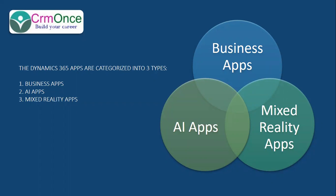These Dynamics 365 apps are categorized into three types. One is Business apps, the second one is AI apps, and the third one is Mixed Reality apps. Under the Business app, whatever business applications we use for the business, we will use the business apps. AI apps means artificial intelligence apps, like Sales Insights and Customer Insights. Mixed Reality is a virtual remote help desk kind of app.